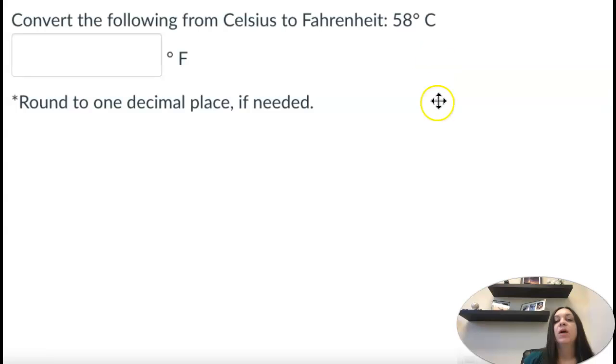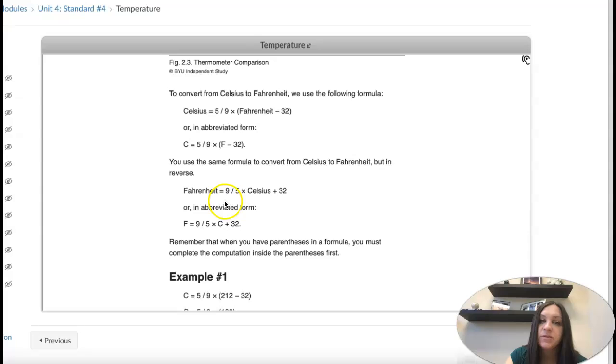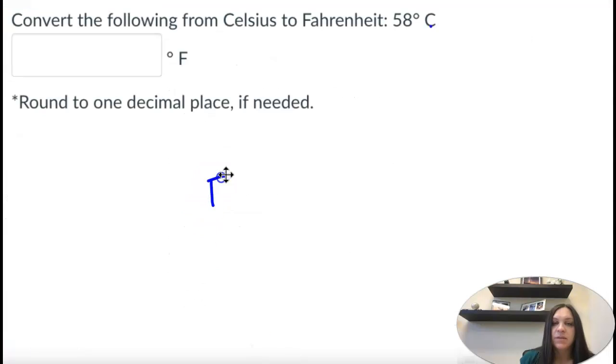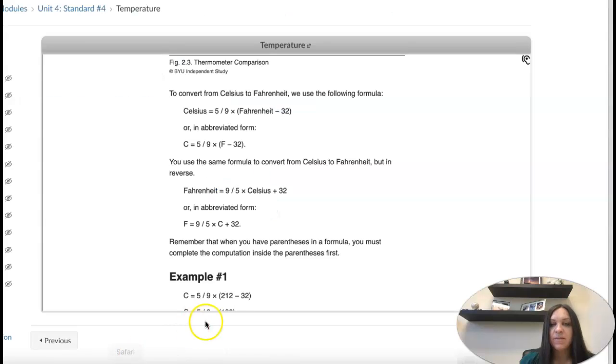Okay, now we go the other way. Now we want to go from Celsius to Fahrenheit. So we have 58 degrees Celsius. What is Fahrenheit? And that's a different formula. So Fahrenheit F equals, and the fraction goes the other way now, 9 fifths times C plus 32.